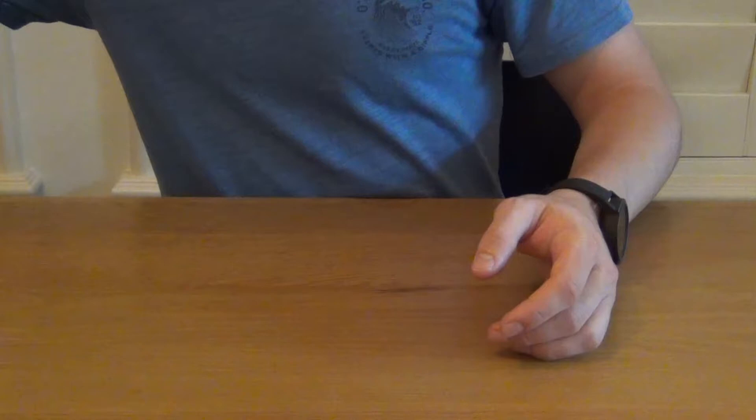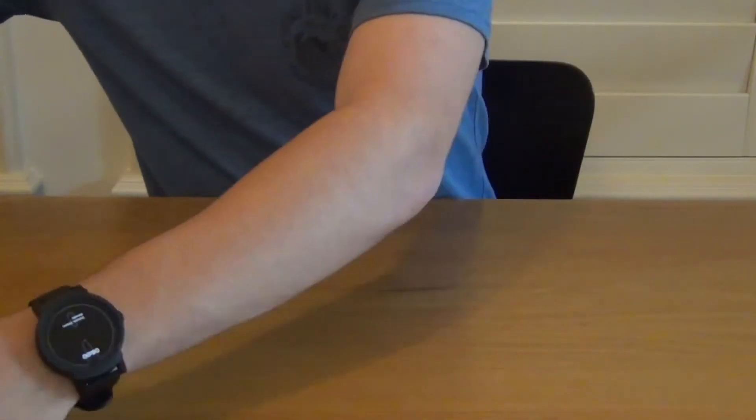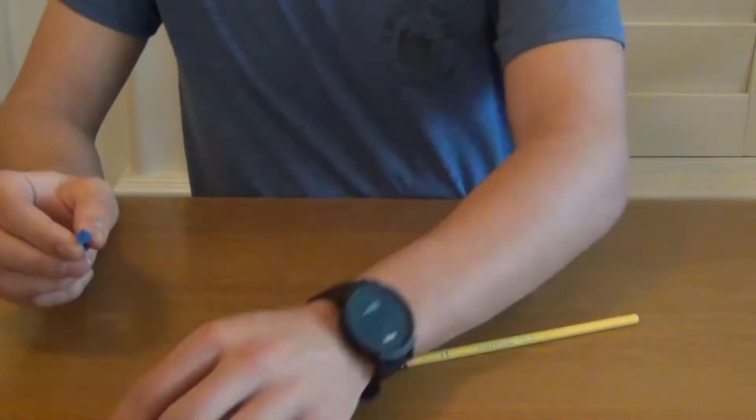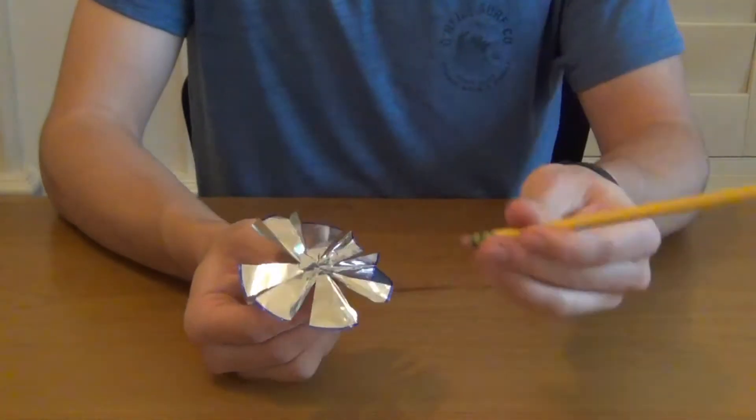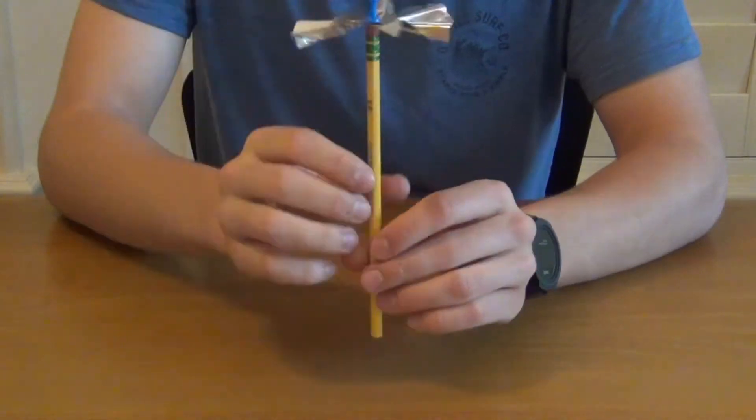Grab the pencil and the pushpin, and put the pushpin through the exact center of the circle, with the folds facing down, and into the eraser on the top of the pencil.